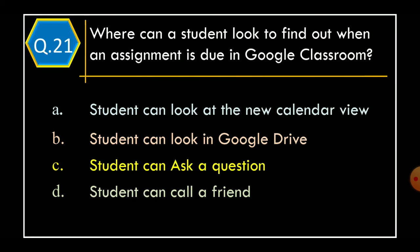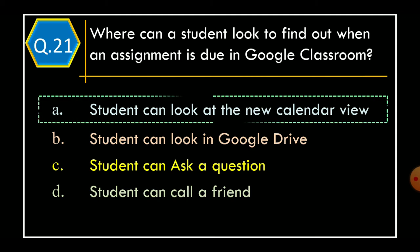Question 21: Where can a student look to find out when an assignment is due in Google Classroom? Option A: Student can look at the new calendar view, Option B: Student can look in Google Drive, Option C: Student can ask a question, Option D: Student can call a friend. And correct option is Option A: Student can look at the new calendar view.